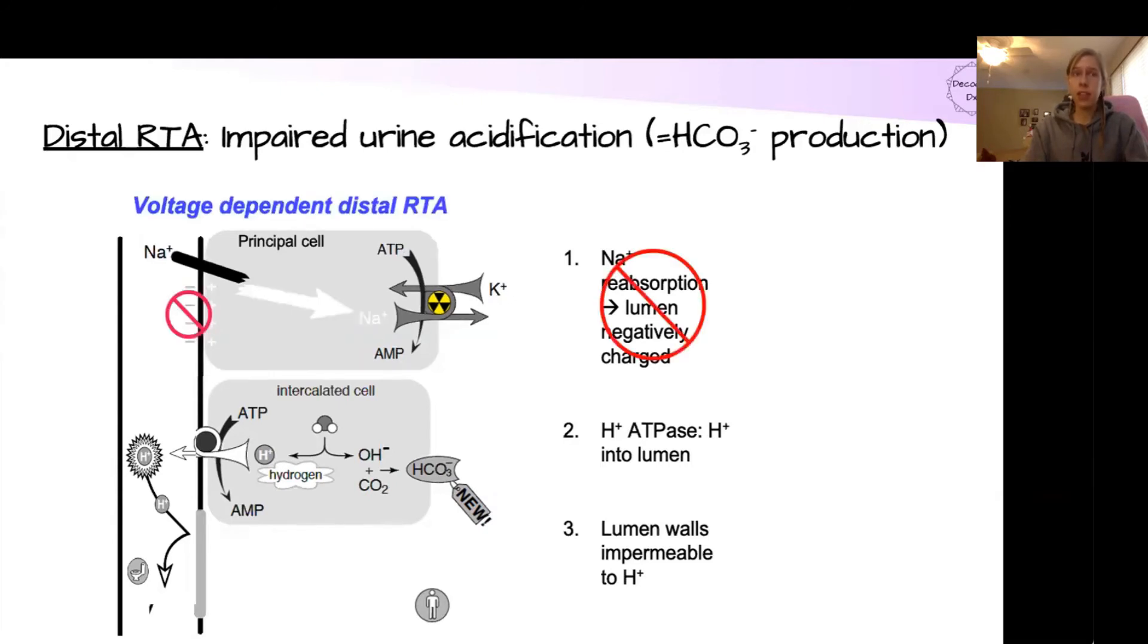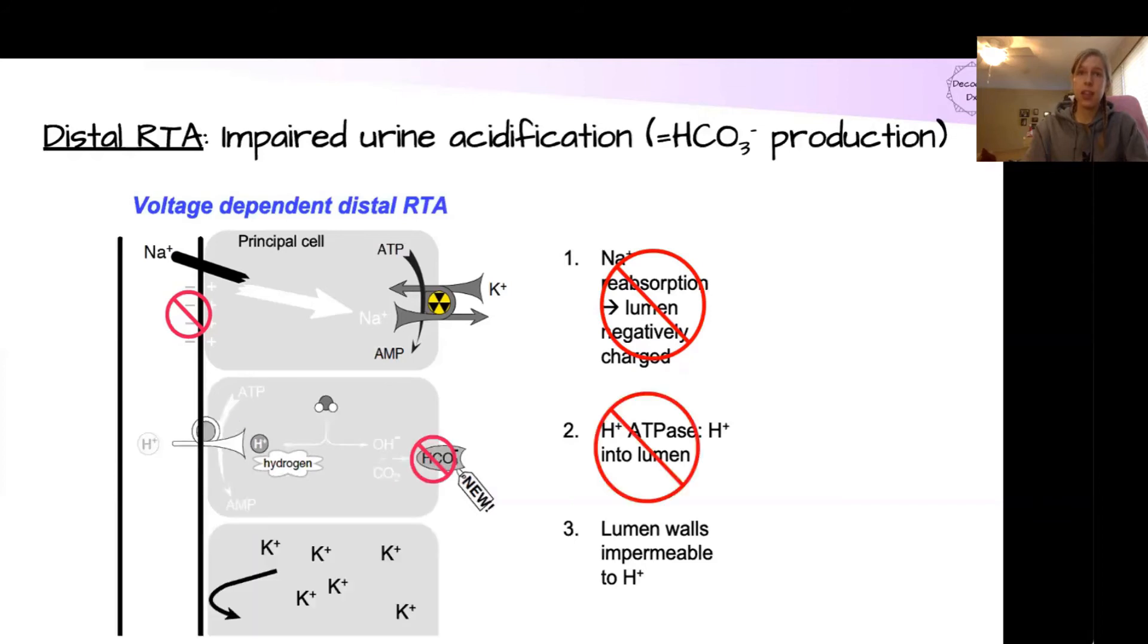There are a couple different steps here that can be impaired that would lead to a renal tubular acidosis. So starting with step one, if that sodium is not able to be reabsorbed, this is called a voltage-dependent distal RTA. This leads to the loss of that electrical gradient from the negative charge in the lumen because we're not reabsorbing that sodium. This also impairs the ability for the ATPase to pump hydrogen. It partially requires that gradient. And what we talked about earlier is that the hydrogen is directly related to the production of new bicarbonate. So if we impair the ability to pump out hydrogen, we also impair the production of new bicarbonate.